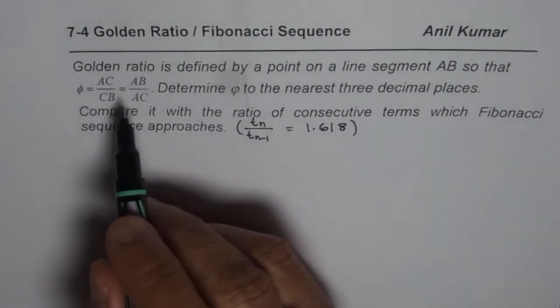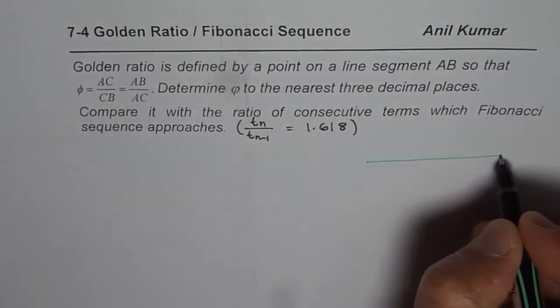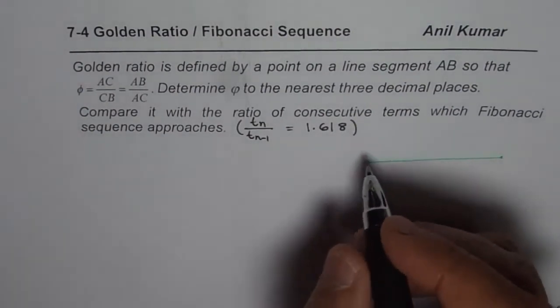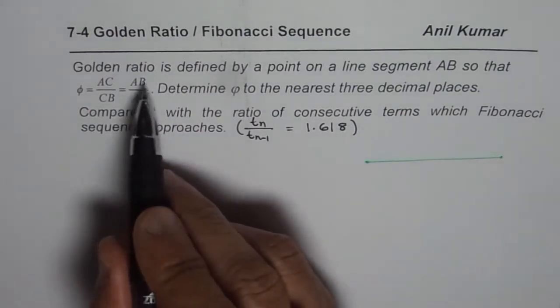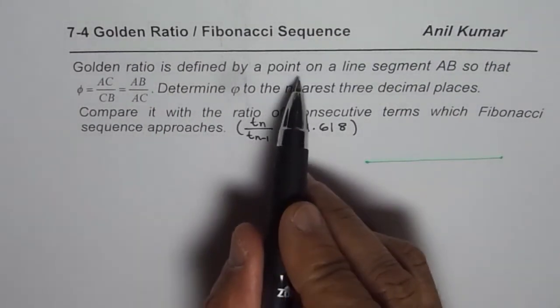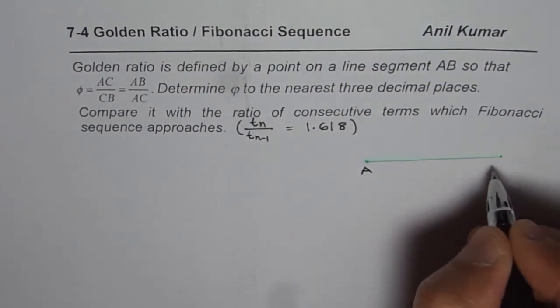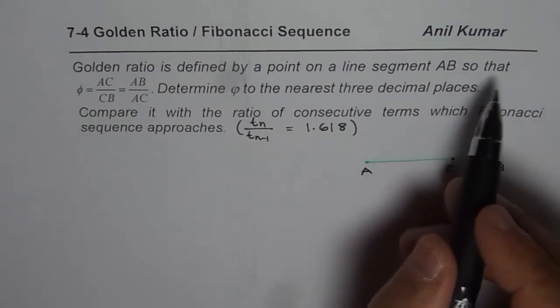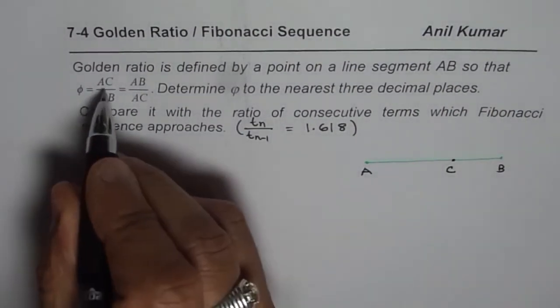Now let's get back to the definition of golden ratio. We are talking about line segments now. Let us say this is my line segment AB. So it says golden ratio is defined by the point on a line segment AB. So this is the line AB and there is a point C on this line.